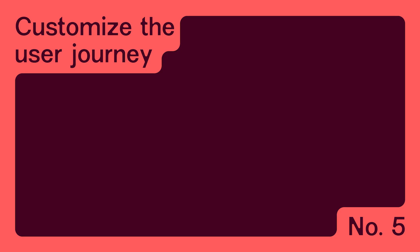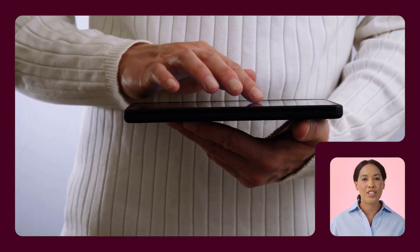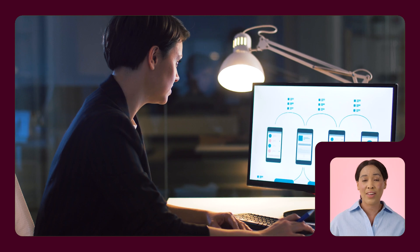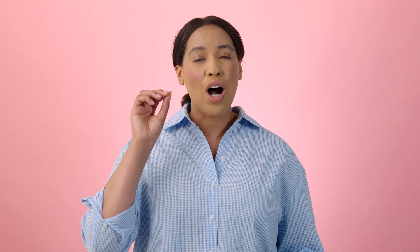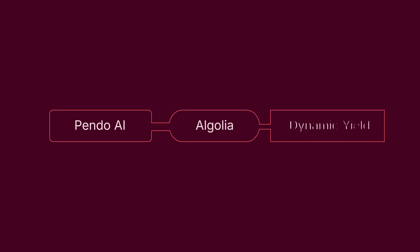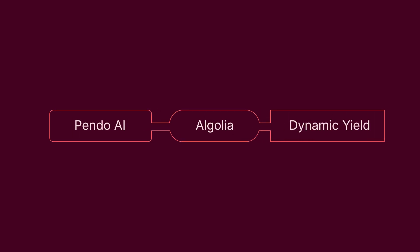Number five: customize the user journey. Personalization and responsive UX design — such as adaptive user interfaces and curated content delivery — are crucial for customer retention and new user adoption, especially if your product or services cater to a wide audience with varying needs. AI tools like Pendo AI, Algolia, and Dynamic Yield help tailor in-app onboarding, adapt search results in real time, and deliver customized layouts.